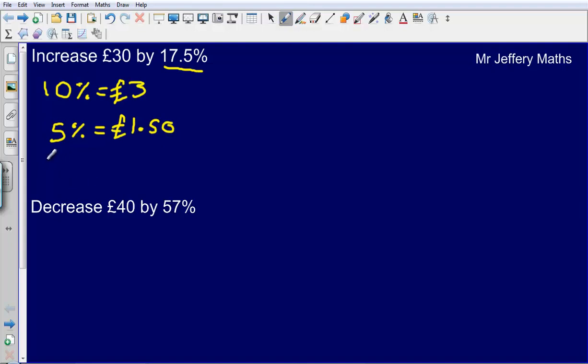Now the next thing that I'm going to do is I'm going to half it. I'm going to find out what 2.5% is. So half of 5% is 2.5%. Half of £1.50 is going to give me 75p.